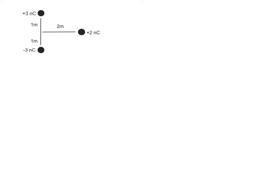So if you recall from class, where we start is by finding the net force by drawing arrows — you've got to start with some kind of a diagram. The three nano coulombs and the two nano coulombs are going to be repulsive because they're both positive. That force, indicated in blue, we'll call F1. The other force between the negative three nano coulomb and the positive two nano coulomb is going to be attractive, therefore towards the minus three nano coulomb, and we'll call that F2.